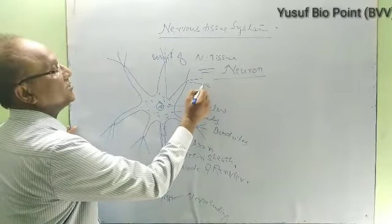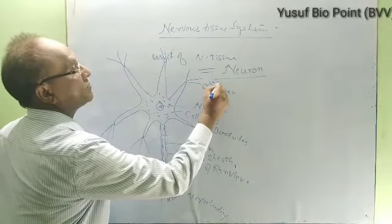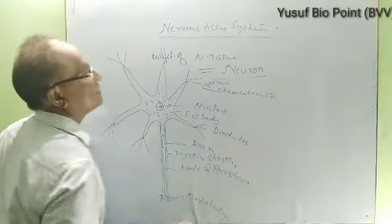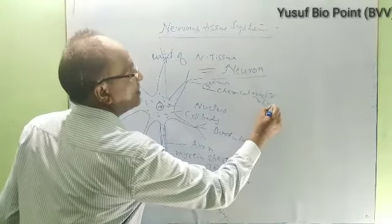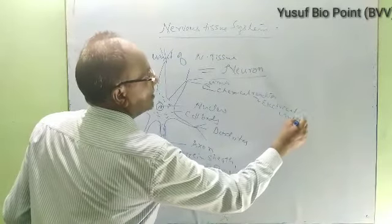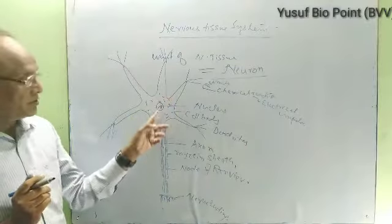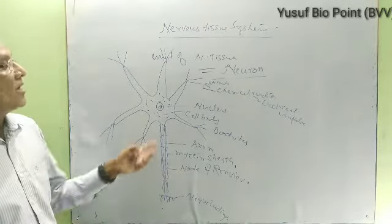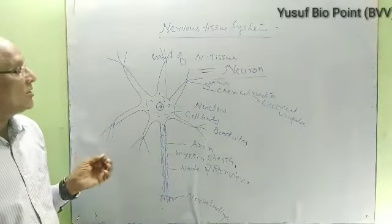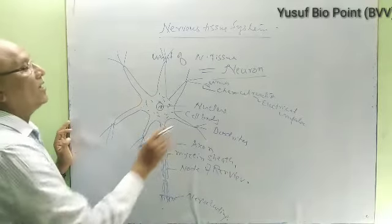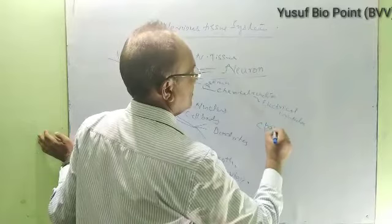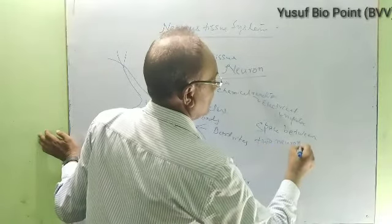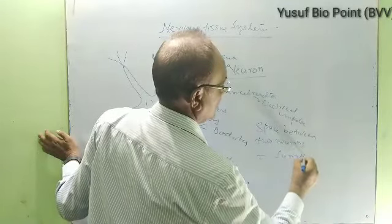When any stimulus is felt, a chemical reaction takes place which develops an electrical impulse. That electrical impulse travels through the neurons from one to another. In this way any stimulus, sensation, or signal goes to the brain, which finally decides what to do. The space between two neurons is called the synapse.